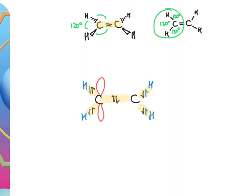The p-orbital is perpendicular — at 90 degrees — to the plane of the carbon–hydrogen and carbon–carbon single bonds. What then happens is these two p-orbitals overlap, and those two single electrons now become a pair occupying this shared space. This is the second pair of electrons, and they are delocalized, meaning they can move between the two carbon atoms. We get this delocalized region above and below the plane of the ethene molecule.